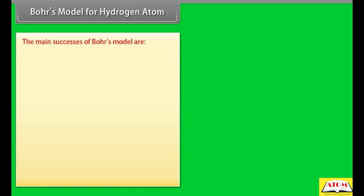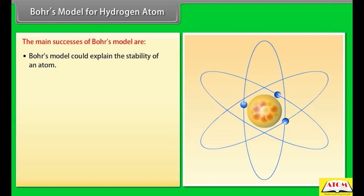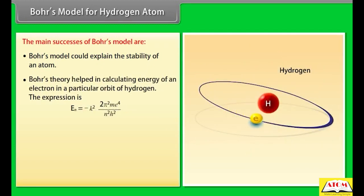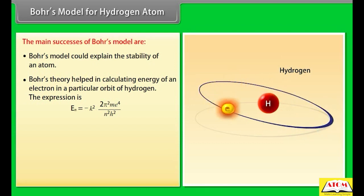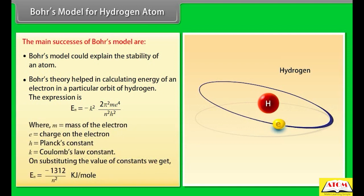The main successes of Bohr's model: 1. Bohr's model could explain the stability of an atom. 2. Bohr's theory helped in calculating the energy of an electron in a particular orbit of hydrogen. The expression is: Eₙ = −k² × 2π²meᵉ⁴ / (n²h²), where m is the mass of the electron, e is the charge on the electron, h is Planck's constant, and k is Coulomb's law constant.